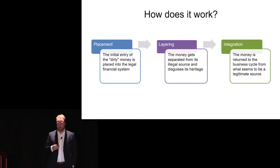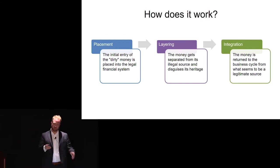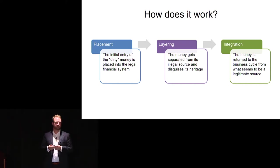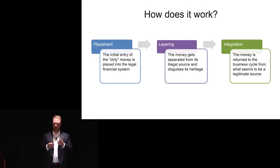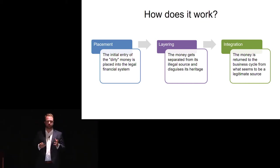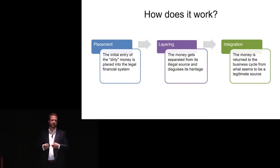If we look at how money laundering works, we normally talk about three stages. The first one is the placement of illegal or dirty cash into the legal financial system. The second stage, so-called layering, is where you disconnect the illegal source from the money — you get a receipt, a contract, some profits from a business — and then you reinvest it into the business cycle.